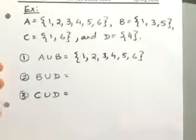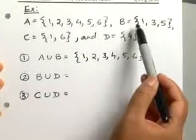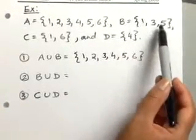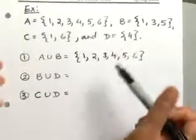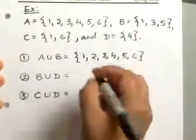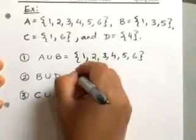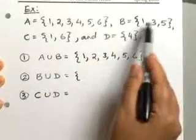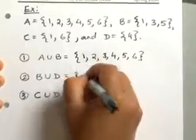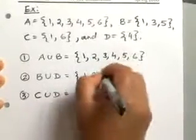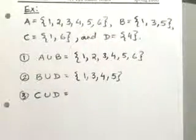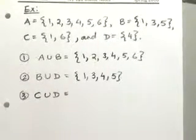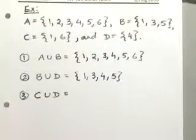Now let's find the union of sets B and D. Set B has elements 1, 3, and 5, and set D has the element 4. When you combine all elements from both sets, you end up with 1, 3, 4, and 5 as the elements in the union.